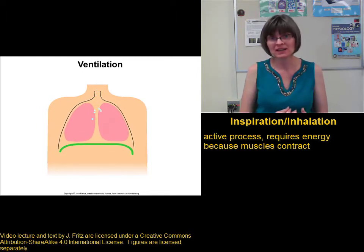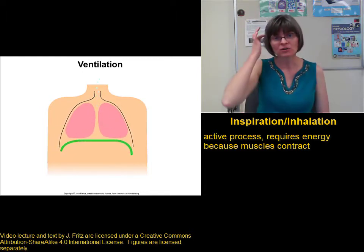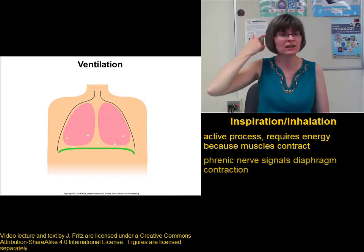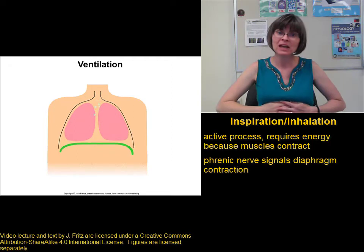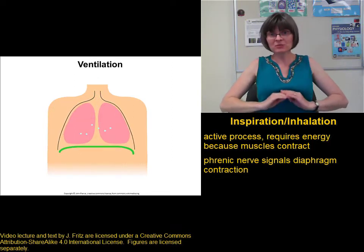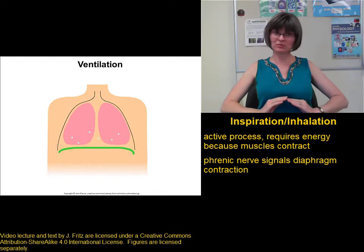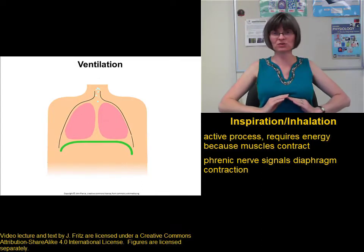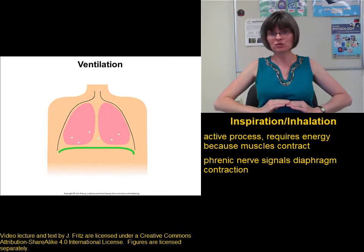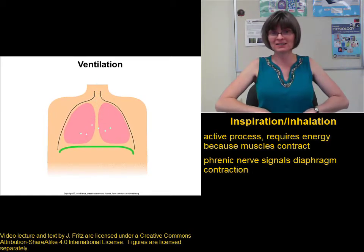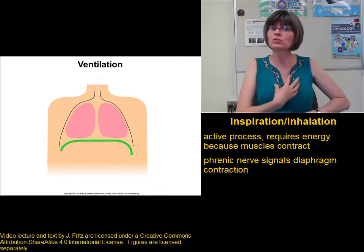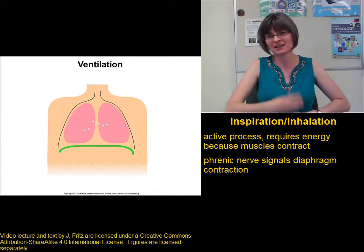When I go to breathe in, a signal goes from my brain down the phrenic nerve to my diaphragm, causing the diaphragm to contract. When the diaphragm is relaxed, it's sort of dome-shaped — pushed up by my abdominal organs, curved up into the thoracic cavity. When the diaphragm contracts, it pulls down flat, which increases the size of the thoracic cavity and lowers the pressure within it.